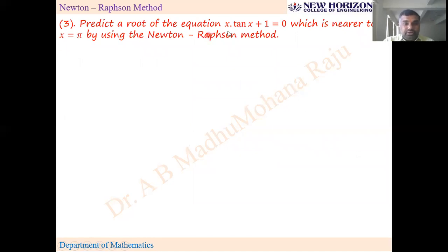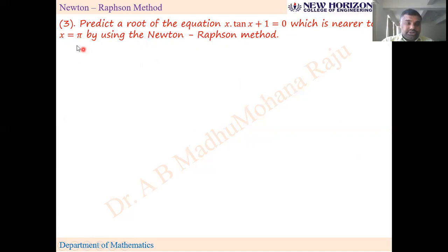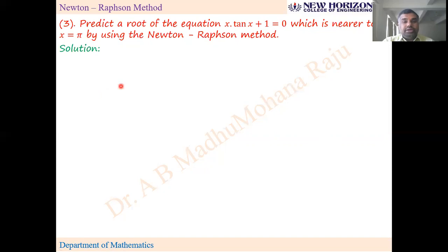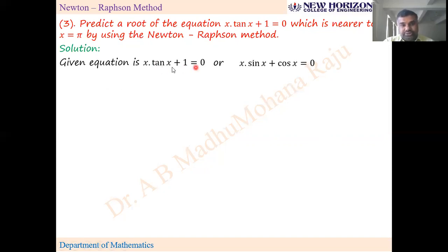Next: predict a root of the equation x·tan(x) + 1 = 0 which is nearer to x = π, using Newton-Raphson method. In the question itself it is mentioned where to find the root, so no need for trial and error — directly take x₀ = π. Take f(x) = x·tan(x) + 1 = 0, which can also be written as x·sin(x) + cos(x) = 0.